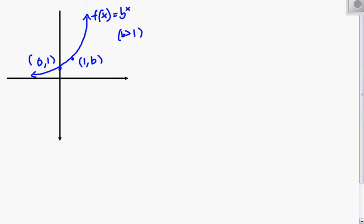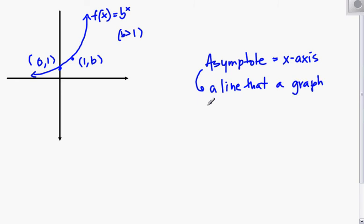Now, with these types of graphs, we're going to have something called an asymptote, which is the x-axis in this graph. And what an asymptote is, is it's a line that a graph approaches more and more closely, but it will never touch it.